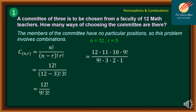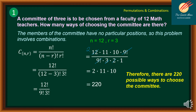We can factor out 9 factorial and 9 factorial, as well as factor out 12 and 3 times 2, which gives us only 2. So we have 2 times 11 times 10, which is equal to 220. Therefore, there are 220 possible ways to choose the committee.